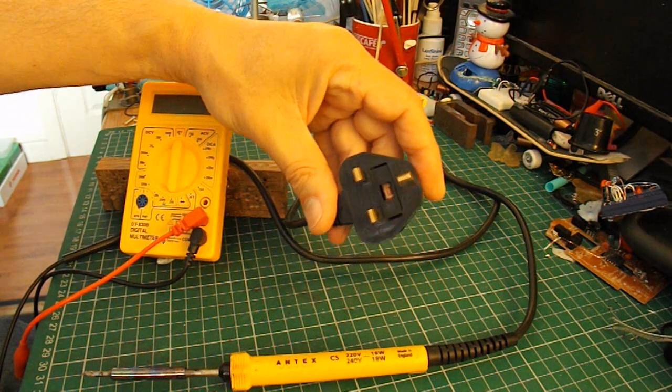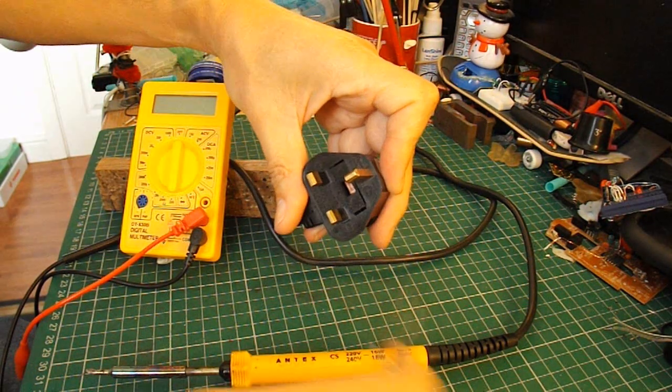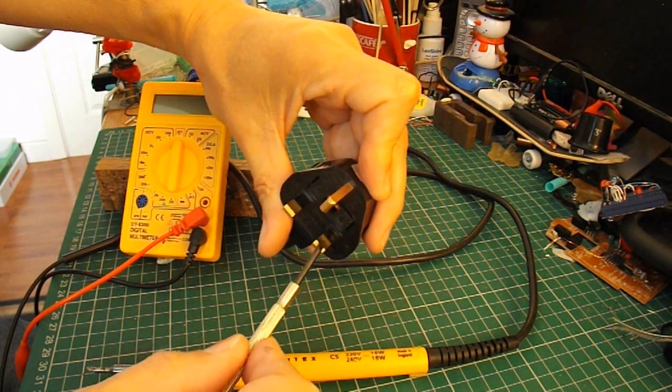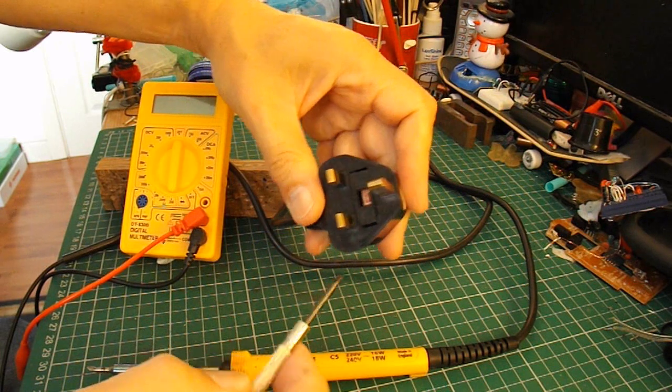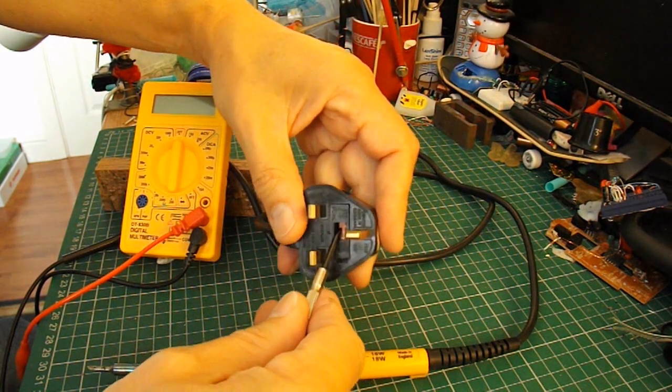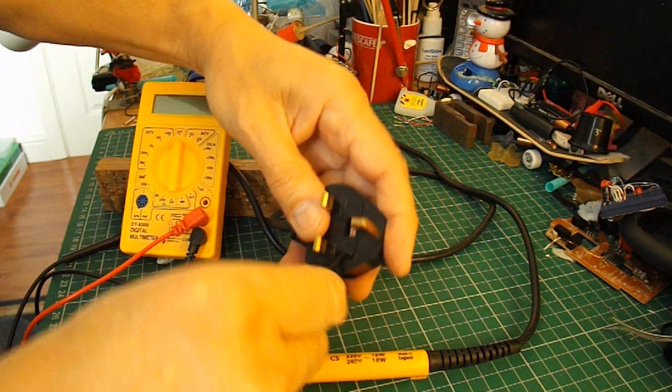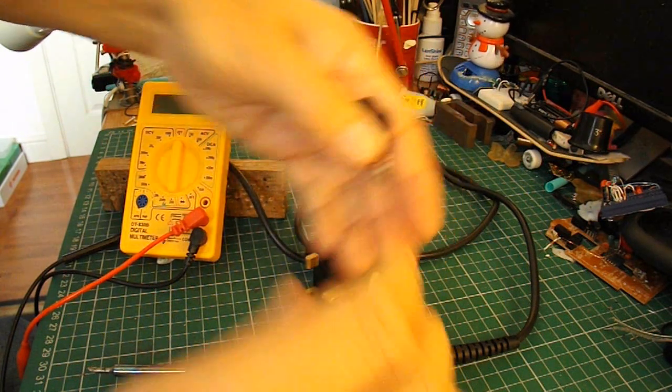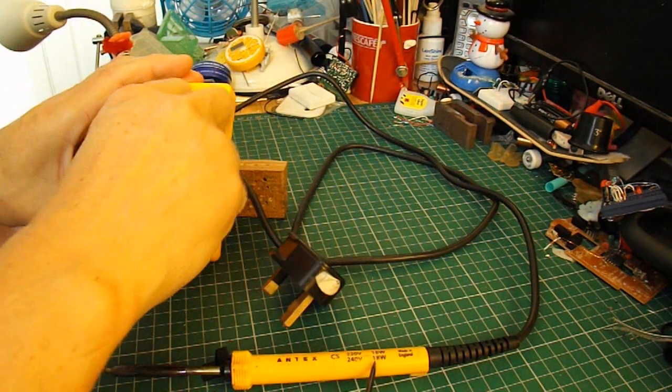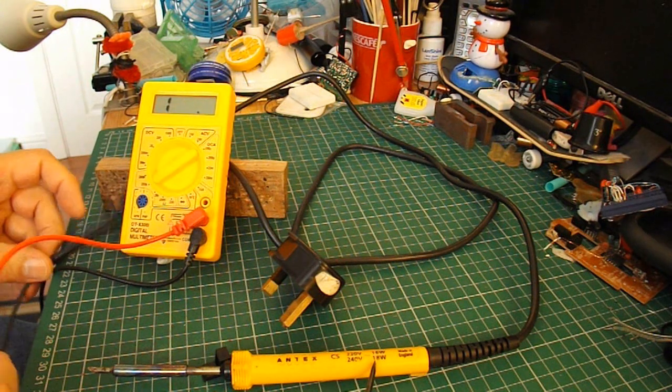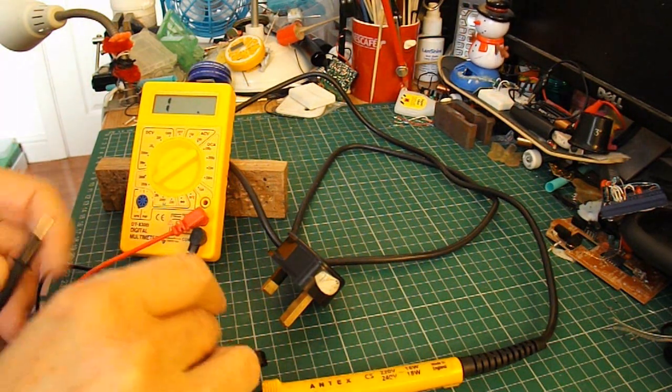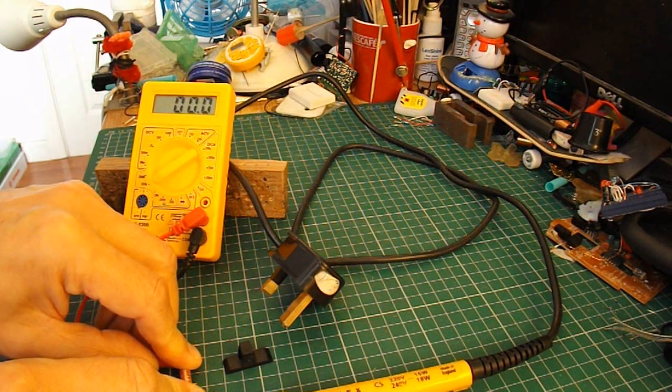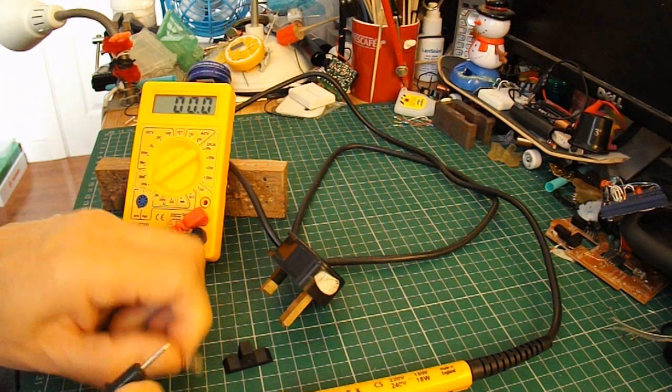First of all, we're in the UK so we have a three pin plug - earth, live, neutral. And we have a fuse. So first thing to check would be the fuse. The fuse is on the live side. So if we go straight across the fuse we should get a full short circuit. So the fuse is good.